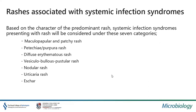I put the rashes under seven categories — though it's not exclusive. These are: maculopapular and patchy rash, petechial and purpuric rash, diffuse erythematous rash, vesiculobullous and pustular rash, nodular rash, urticarial rash, and eschar.